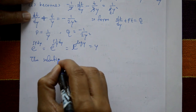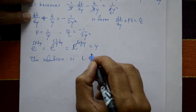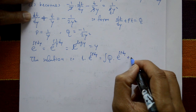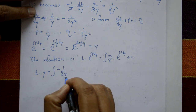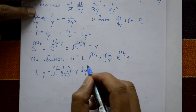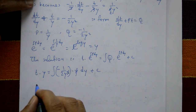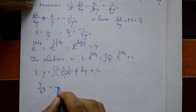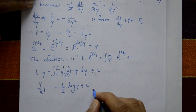The solution is: t into (integrating factor) equals integral of Q times (integrating factor) dy plus c. So t into y equals integral of minus 1 upon 2y squared times y dy plus c. After cancelling 1y, this gives: 1 upon x cubed times y equals minus 1 by 2 times log y plus c. This is the required solution.